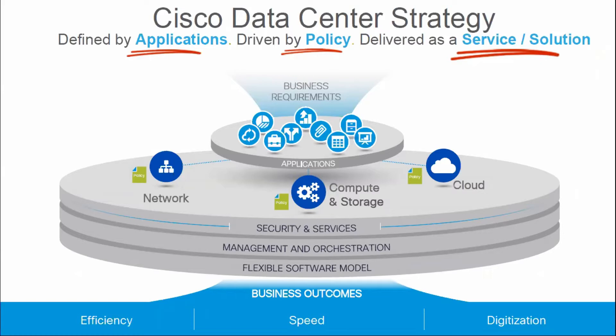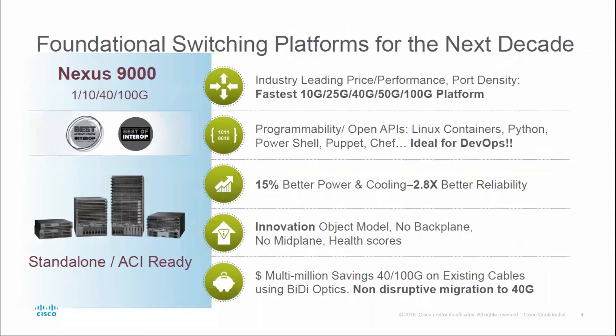The business outcome of ACI is efficiency, speed, and digitization. It is the hottest technology in the data center environment. The foundational switching platform for ACI is the Nexus 9000, which is industry-leading in price and performance, with port density supporting the fastest 10 gig, 25 gig, up to 100 gig. It provides programmability, open APIs, and is ideal for DevOps environments, with 15% better power and cooling and 2.8% better reliability.